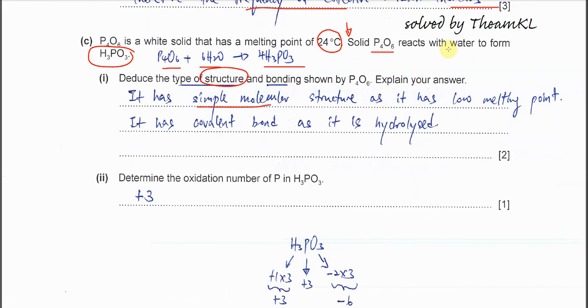Since it reacts with water, it will undergo hydrolysis. Whenever any compound reacts with water, it must undergo hydrolysis. So we know it must have covalent bond because it's being hydrolyzed. You have to explain in terms of structure and bonding. Bonding must be covalent because it reacts and is hydrolyzed.